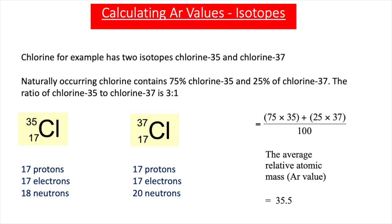To work out the AR value of chlorine, we simply work out a weighted average. We have 75% of it being the 35 isotope, so we do 75 times 35. And we have 25% of it being the 37 isotope, so we add 25 times 37. We divide this by 100 because there's 100% in total. So the average relative atomic mass, the AR value, will be 35.5. This method is identical to working out the mean average for a class test — if 75 people had a mark of 35 and 25 people had a mark of 37, we would use this identical method to work out the average.